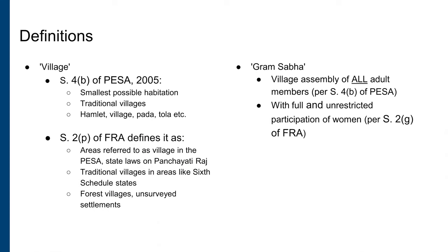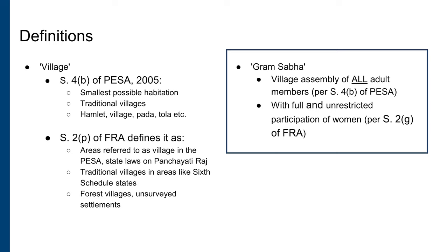Section 6 of FRA places the Gram Sabha at the core of the Rights Recognition Procedure. The Gram Sabha is the authority to initiate the claims filing, verification, and registration process. Remember that the Gram Sabha referred to in FRA is the same as the Gram Sabha defined in PESA. Additionally, under Rule 4-2 of the Forest Rights Rules, the quorum for Gram Sabha meetings is different from that of the ordinary Panchayat-level Gram Sabha.